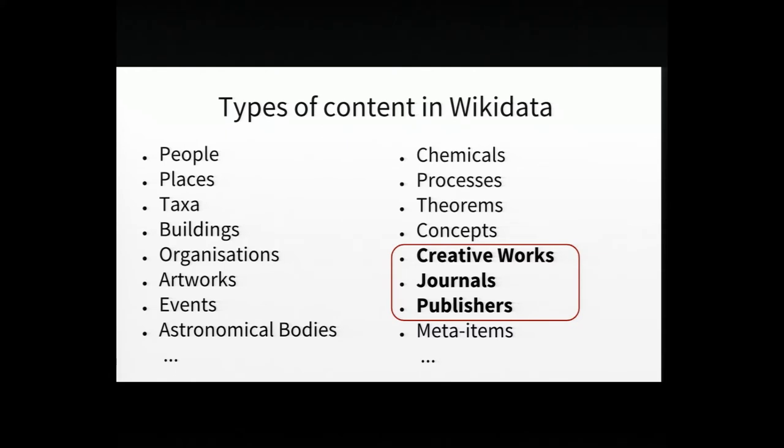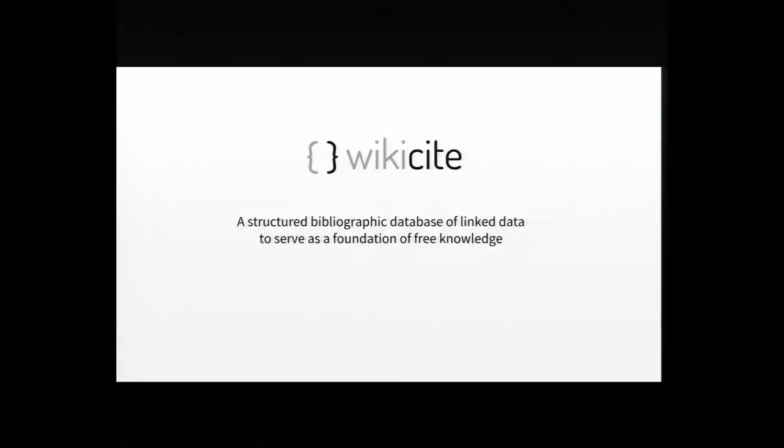I'm going to focus for a second on a specific type of content: Creative Works. Bibliographic metadata is one prominent type of structured data, so it actually makes a lot of sense to store in Wikidata information about sources. Wikidata has extensive information about creative works, journals, publishers, and all the other types of items associated with these entities. Back in 2016, we started a project called Wikisight that builds on top of Wikidata with the goal of creating a structured bibliographic repository to serve as a foundation of free knowledge. The original use case was to support Wikipedia and the sourcing needs of Wikipedians, but Wikisight is currently serving a much broader set of use cases.